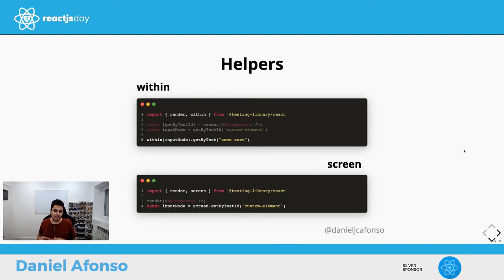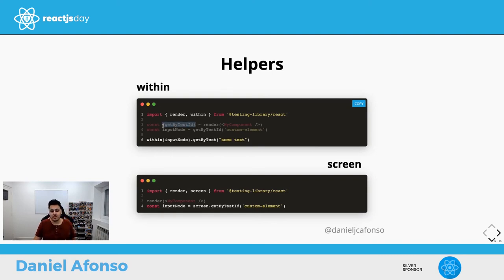The second helper is 'screen'. Screen is a reference to the entire container where the component is rendered. Instead of destructuring queries from the render result, you import screen and use screen.getByText() — or any other query — directly on the document body, without needing to destructure from render.